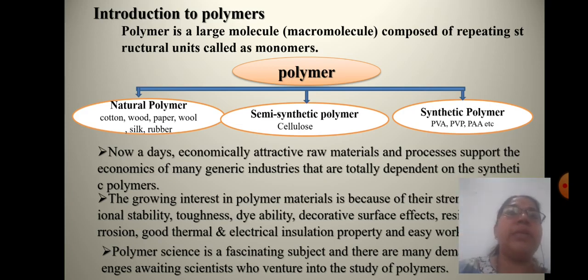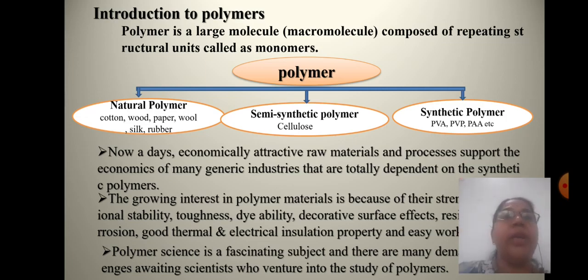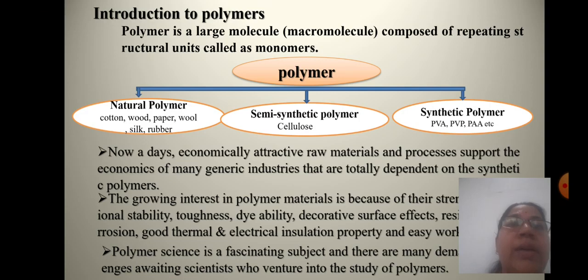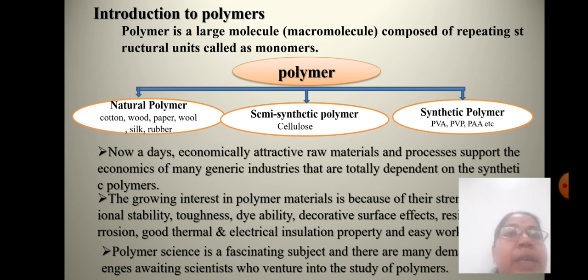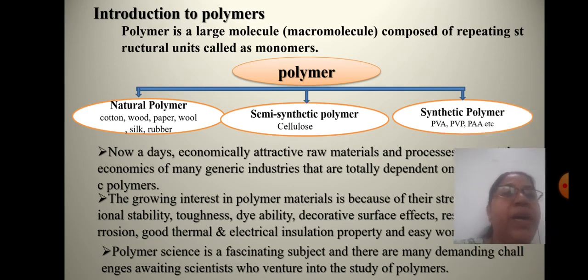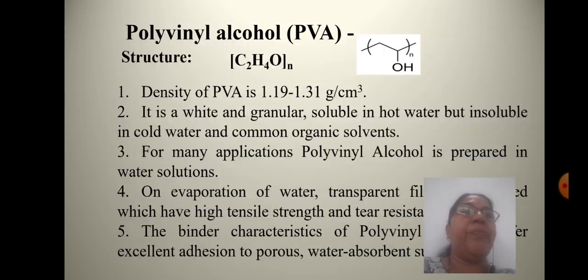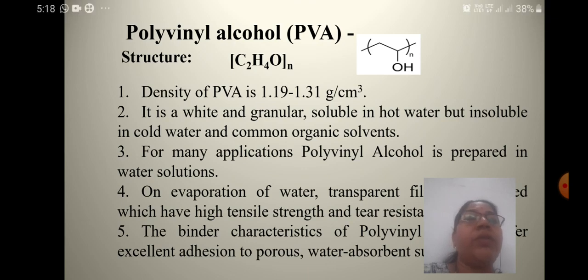Why do we use synthetic polymers? Nowadays, economically attractive raw materials and processes support the economics of many generic industries that are totally dependent on synthetic polymers. The growing interest in polymer materials is because of their strengthening ability, stability, toughness, durability, and decorative surface effects. Polymer science is a fascinating subject with many demanding challenges. Here, we have chosen the synthetic polymer PVA, having the structural formula (C2H4O)n.